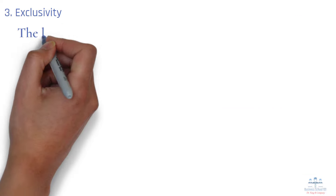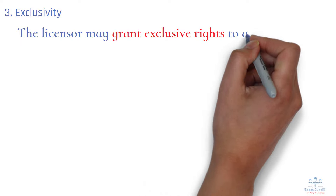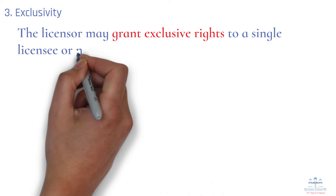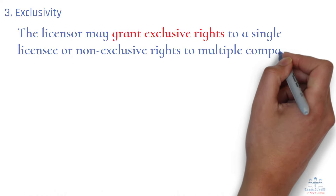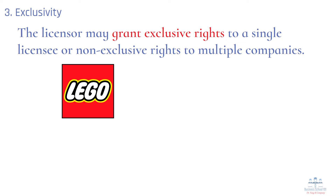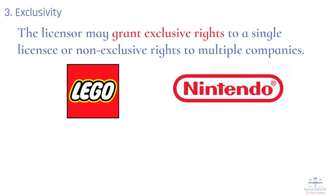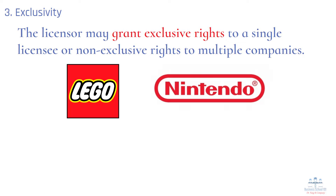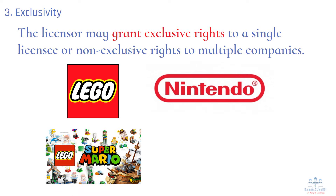Number 3: Exclusivity. The licensor may grant exclusive rights to a single licensee or non-exclusive rights to multiple companies. For example, LEGO secured an exclusive licensing agreement with Nintendo to produce Super Mario-themed LEGO sets. This agreement gave LEGO exclusive rights to create construction sets based on the Super Mario brand, preventing other toy companies from entering that space with similar products.